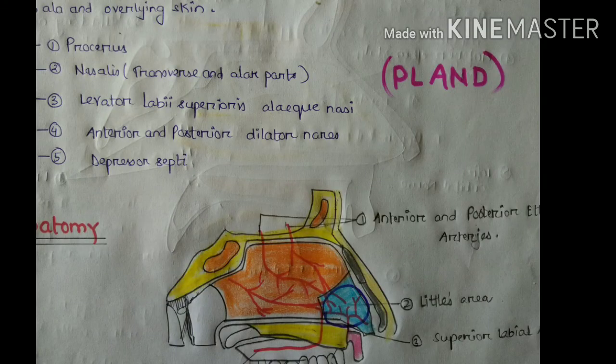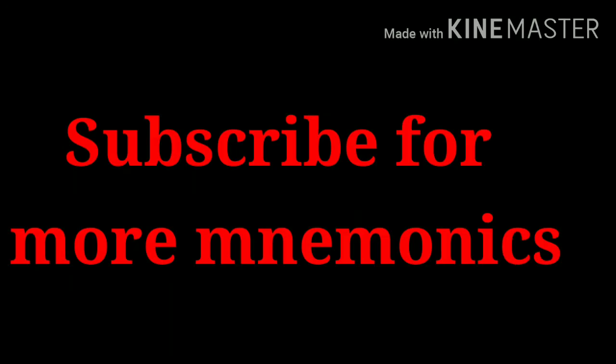Breaking down the mnemonic: P for procerus, L for levator labii superioris alaeque nasi, A for anterior and posterior dilator nares, N for nasalis (the transverse and alar parts of the nasalis muscle), and D for depressor septi. Thank you.